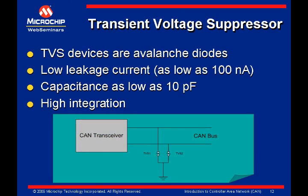Transient voltage suppressors, or TVS devices, operate as avalanche diodes which turn on at high voltage to shunt voltages to safe levels for the transceiver. Like MOVs, TVS devices have very fast turn-on times, typically less than one nanosecond. However, unlike MOVs, TVS devices can have very low leakage current, as low as 100 nanoamps. Also, capacitance is very low, making TVS devices virtually transparent to the CAN system during normal operation. TVS devices are offered in pairs — i.e., matched capacitance — and have very small footprints, making them ideal for the CAN bus. Additionally, TVS devices can be combined with other diodes to create different protection schemes, although those schemes are beyond the scope of this presentation.